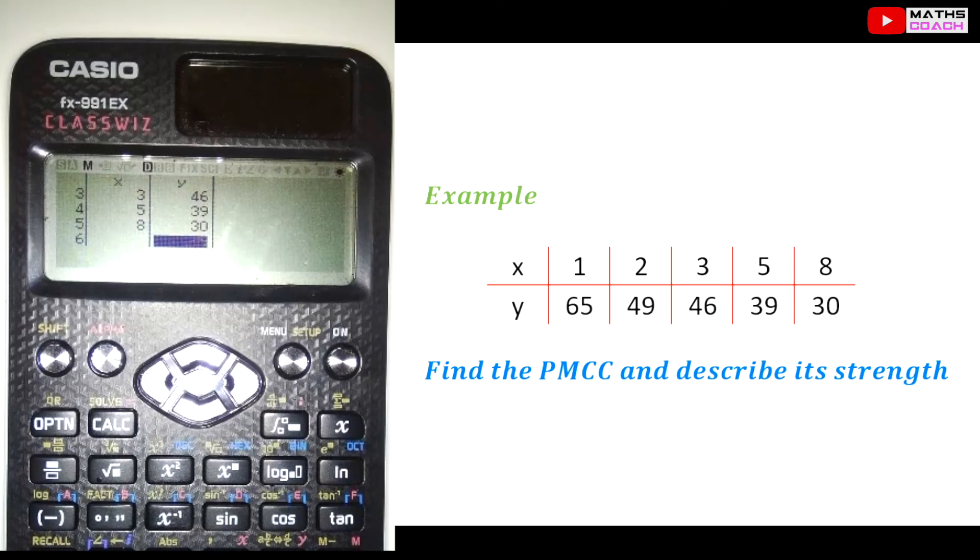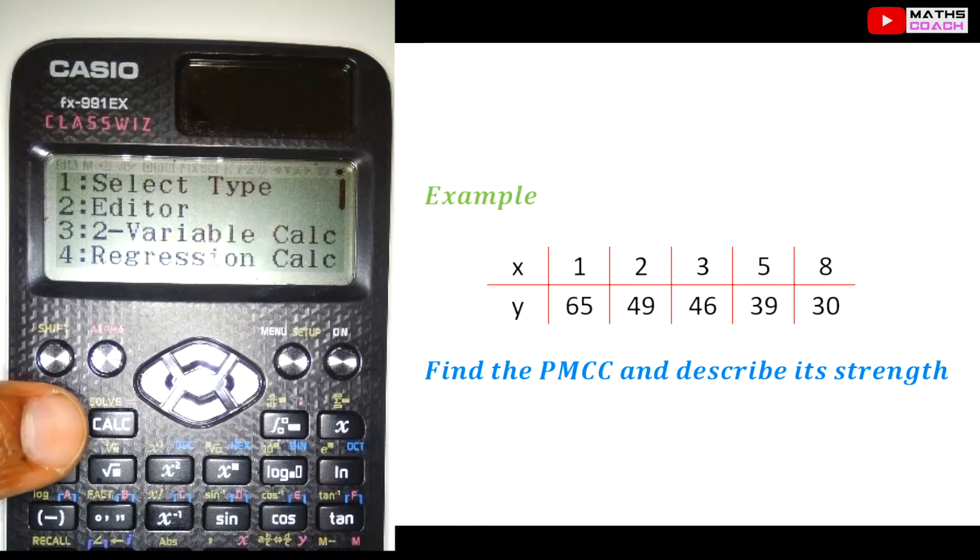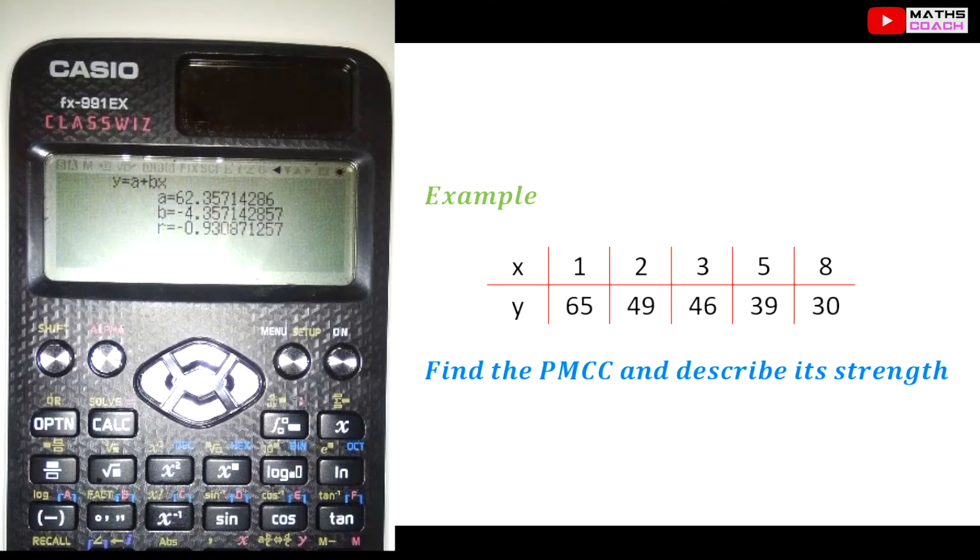Once you've got all 10 pieces of data on, we now need to use the calculator to work out our PMCC. And this is where we go to the option button on the top and you go to number 4. And number 4 is regression on calculator. If you go to number 4, you can see here it has 3 values there. We have an A value, which in this case will be our Y-intercept. We have our B value, which will be our gradient. Now you can see the gradient here is negative 4.36. That's obviously what we knew, that was a negative correlation. But more importantly for today's lesson, we have a bottom number of an r. And our r would be negative 0.930871 and so on.